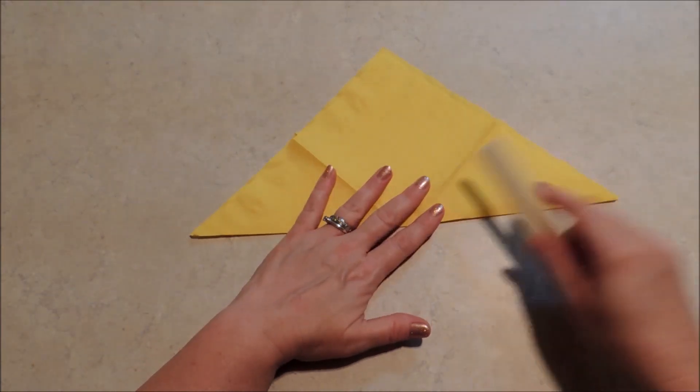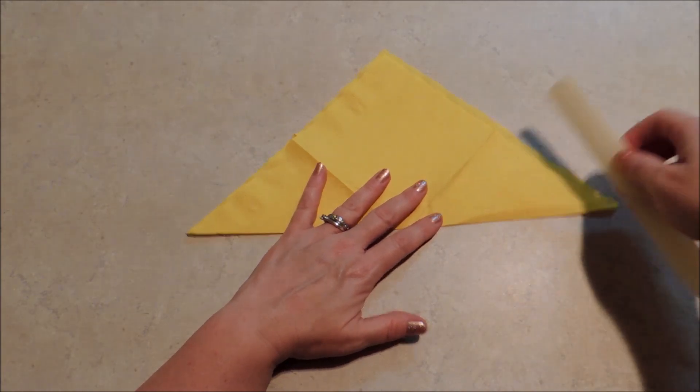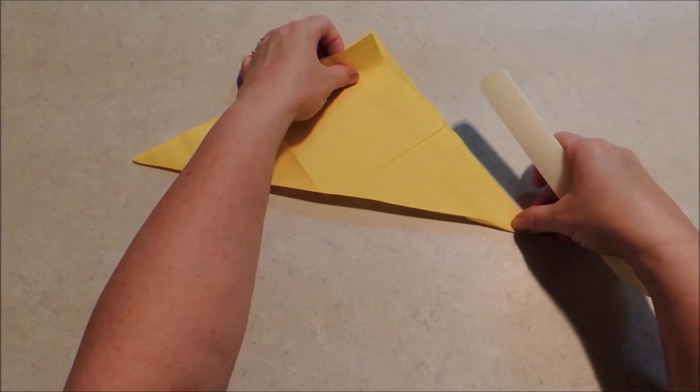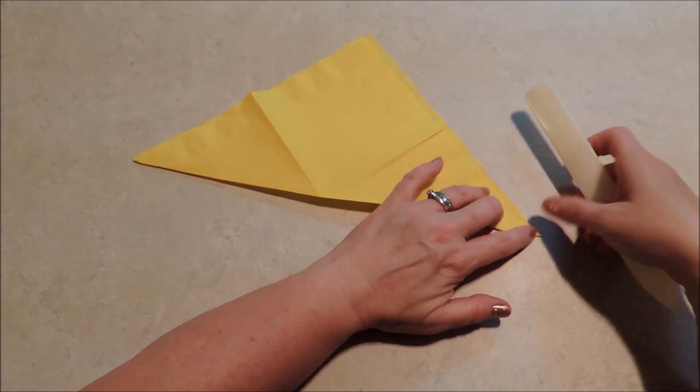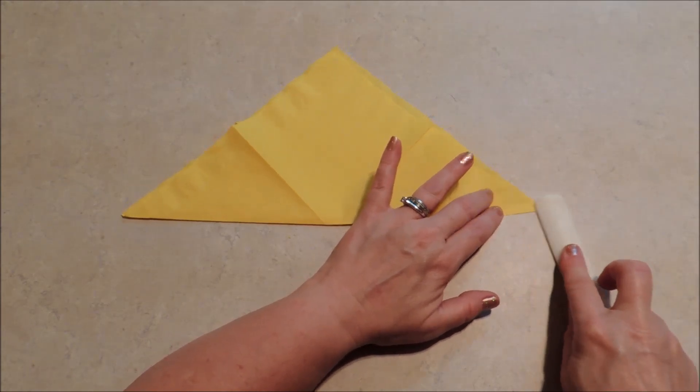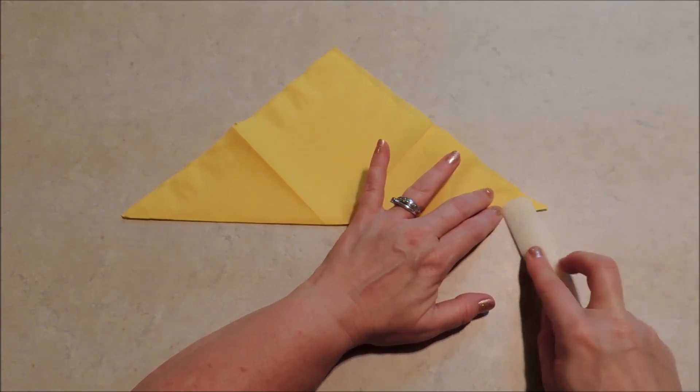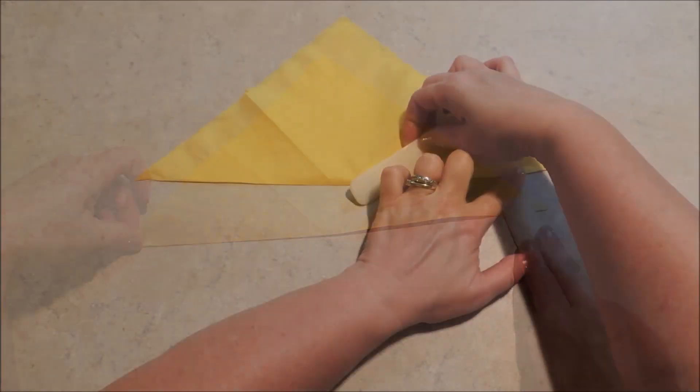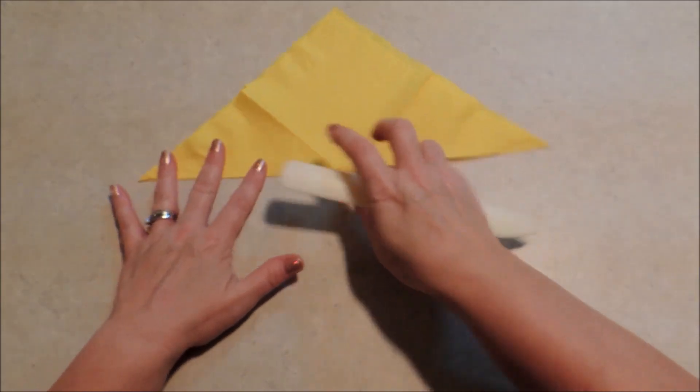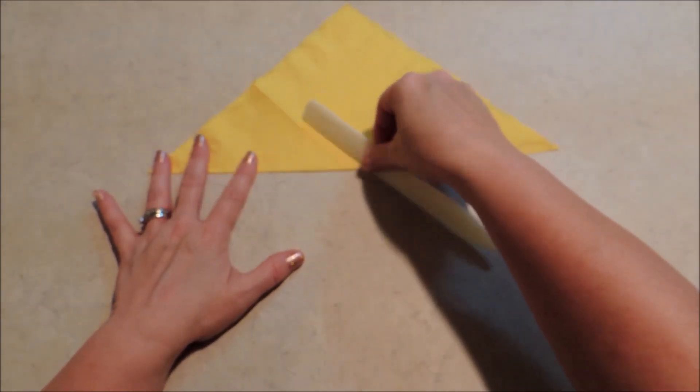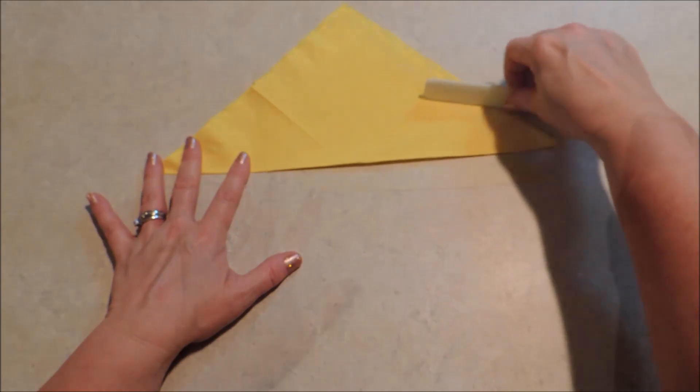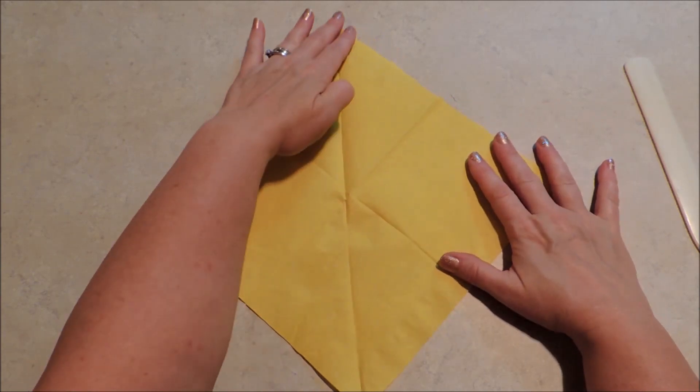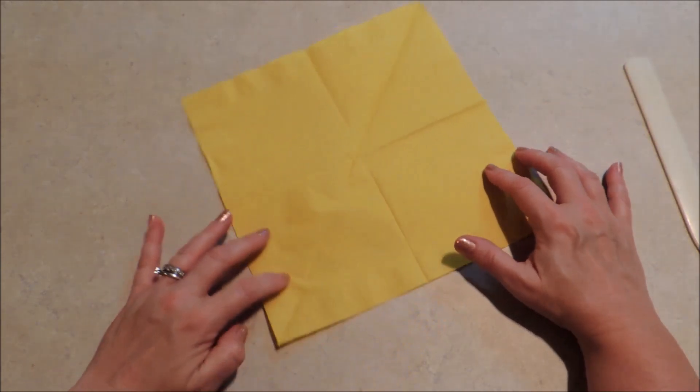I'm even going to bring in my bone folder to make sure that I crease that good. And you can see that threw me off a little bit on my corner there. I'm going to crease it really well on these tips out here, and then press it in between. And now we're going to turn it this way and open that back up. We really just wanted to get that line established down the center there.